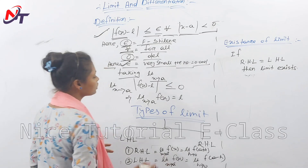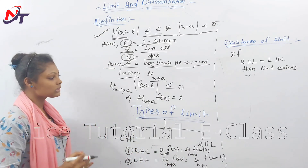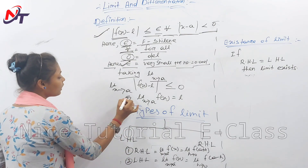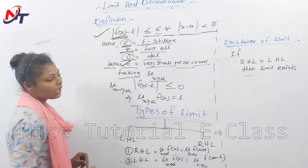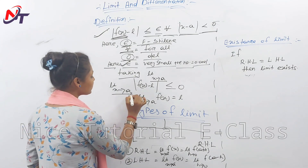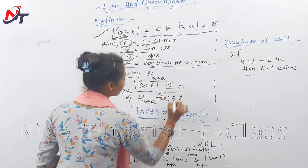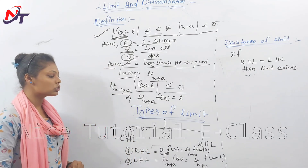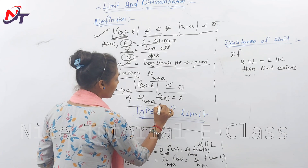So: limit as x tends to a of f(x) equals L means that |f(x) − L| is less than or equal to epsilon whenever x approaches a. This implies limit x tends to a of f(x) equals L.